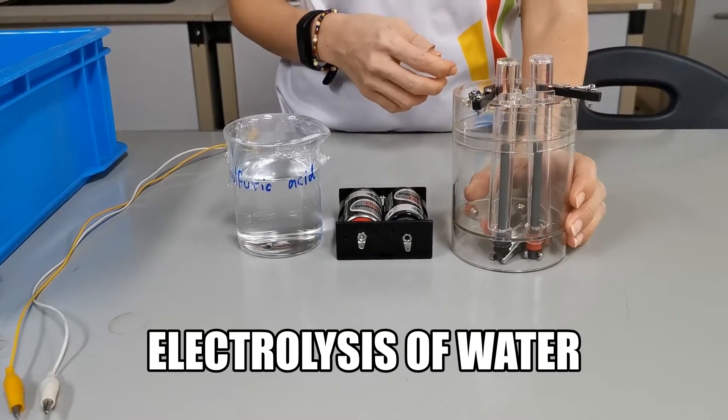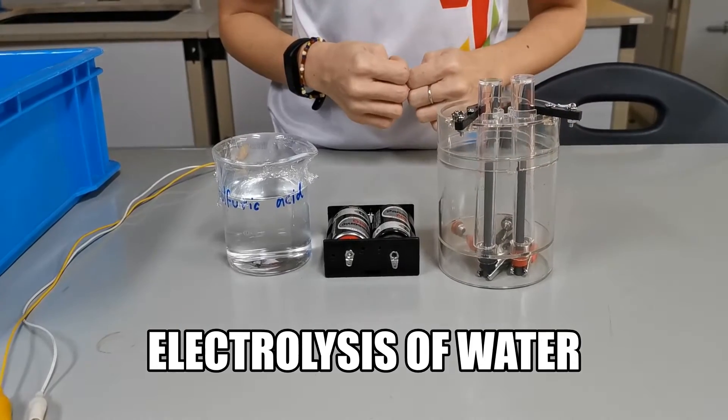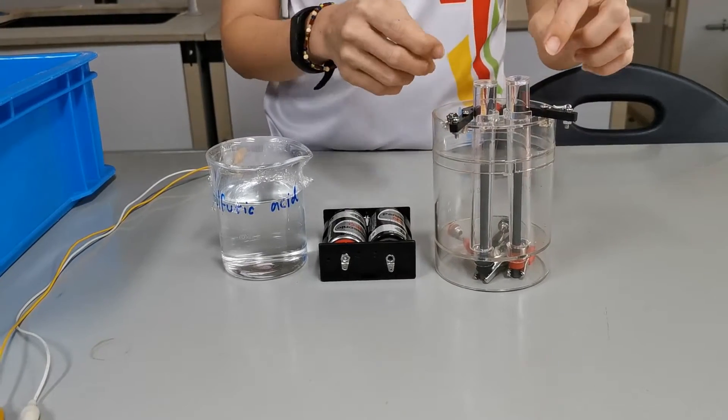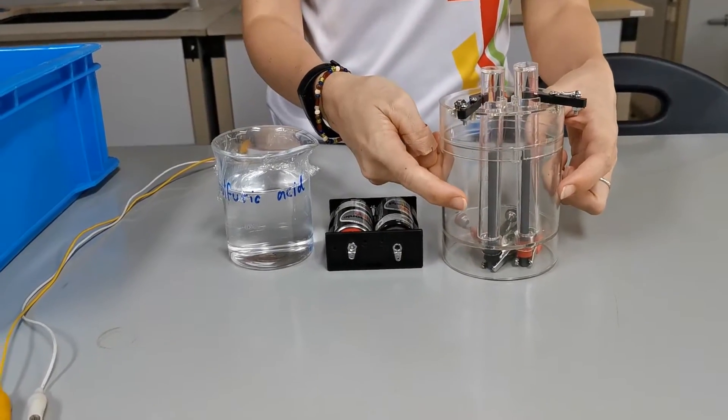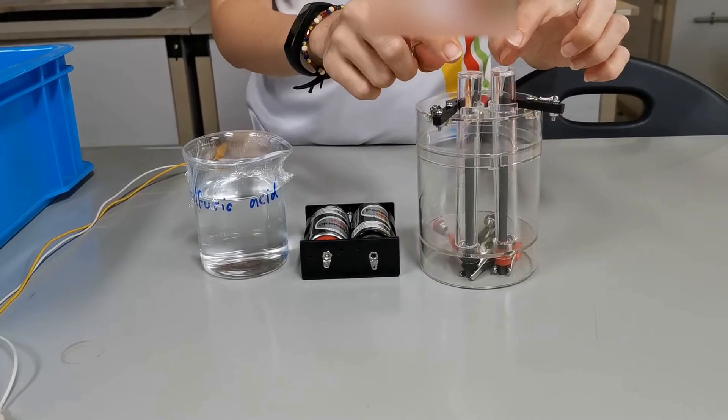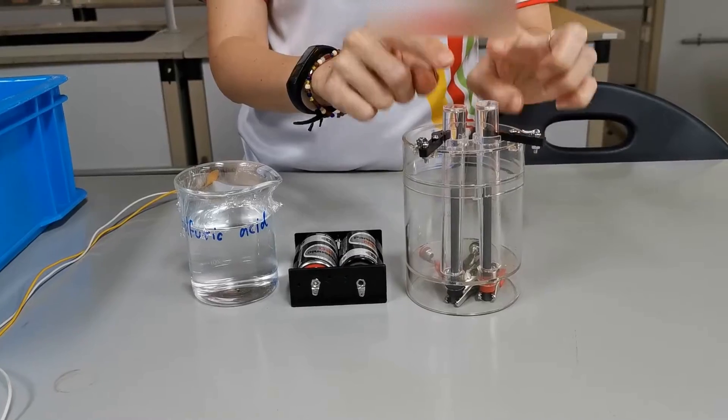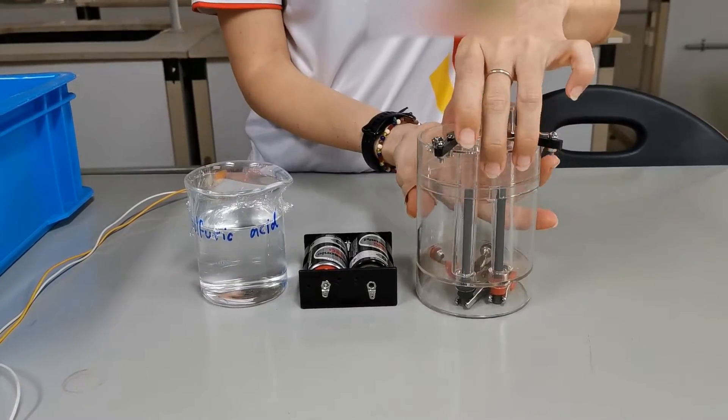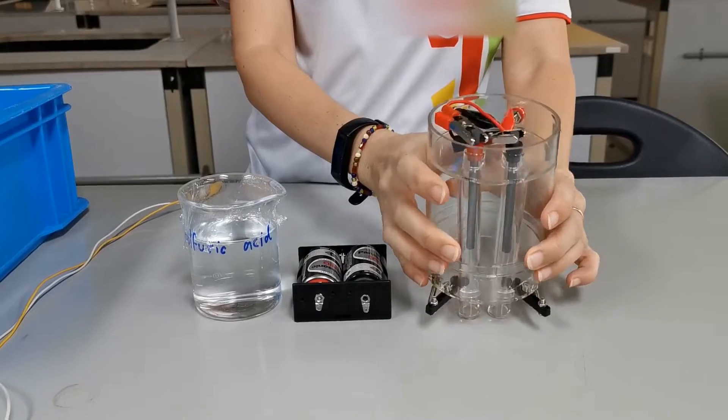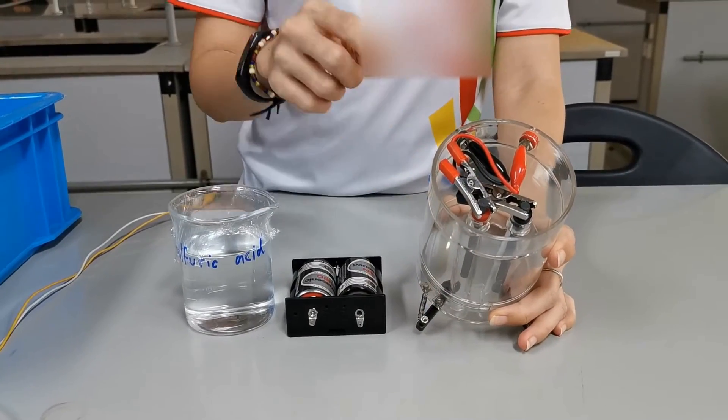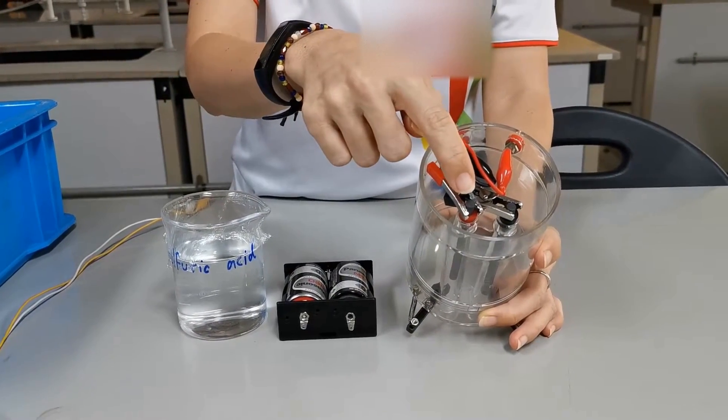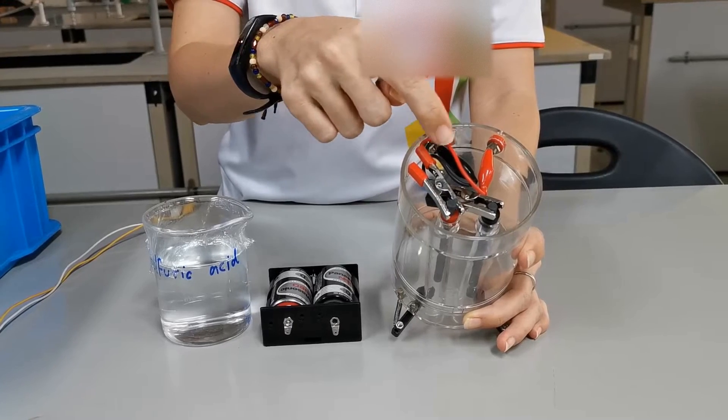This device is used for electrolysis of water. We have two carbon electrodes here and two tubes to capture and measure the volume of gases produced. At the bottom here we have the carbon electrode connected to a metal piece.